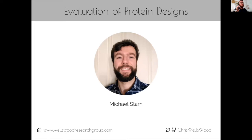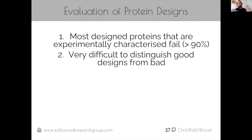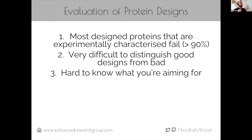Most designed proteins are experimentally characterized as failures. There is also a good body of literature showing it is very difficult to distinguish good designs from bad ones. For example, work from Emmanuele Paci's group in Leeds tried evaluating Rosetta designs: they had one confirmed structure and looked at the top 100 models — they couldn't distinguish them from Rosetta scores, and the top-ranked model was not the successful one. Additionally, the objectification problem is challenging: how do you specify what properties your protein should have to be fit for purpose?